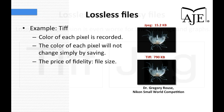The most common alternative to a lossy format like JPEG is the TIFF format. Saving your original images as TIFFs will ensure that the color of each pixel is recorded and will not change as a result of simply resaving the file. The downside is file size — saving as a TIFF results in a file that is many times larger than a JPEG. If you're taking hundreds or thousands of images, it may be wise to invest in external memory or a cloud-based repository.